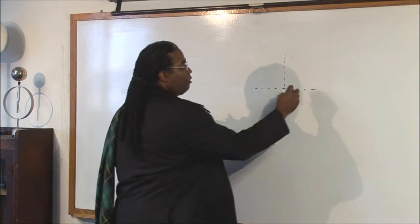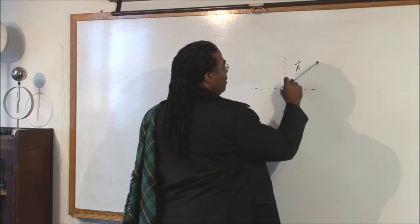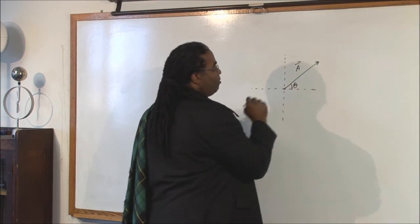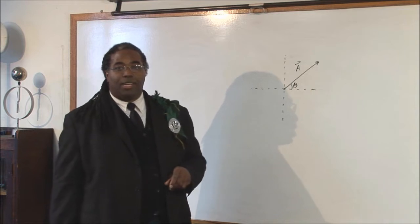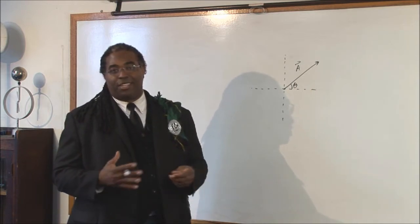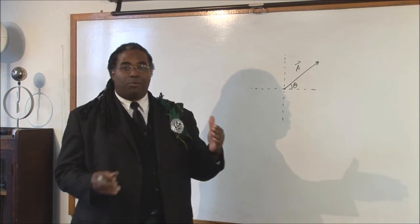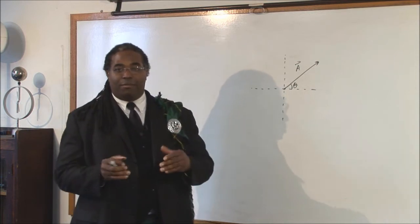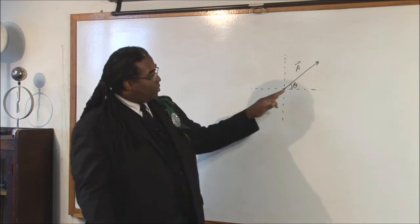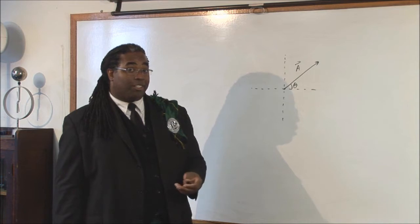Let's just draw a vector and we'll call it vector A. That makes an angle theta with the x-axis. You're going to have to resolve a lot of vectors into their x and y components. This is where the math and the trigonometry come together. Do you understand what components are?